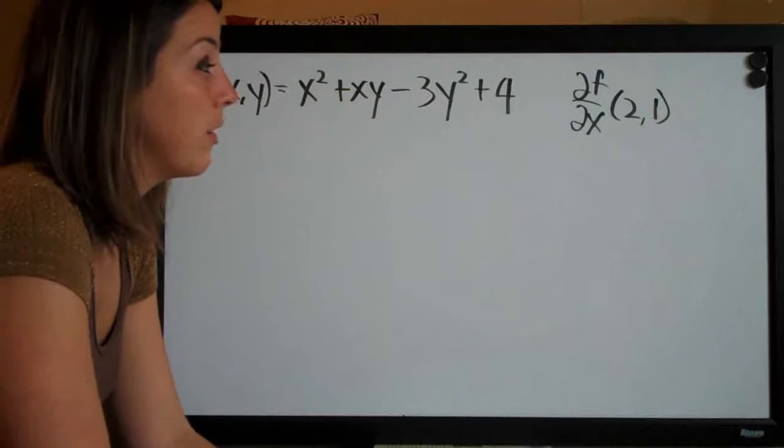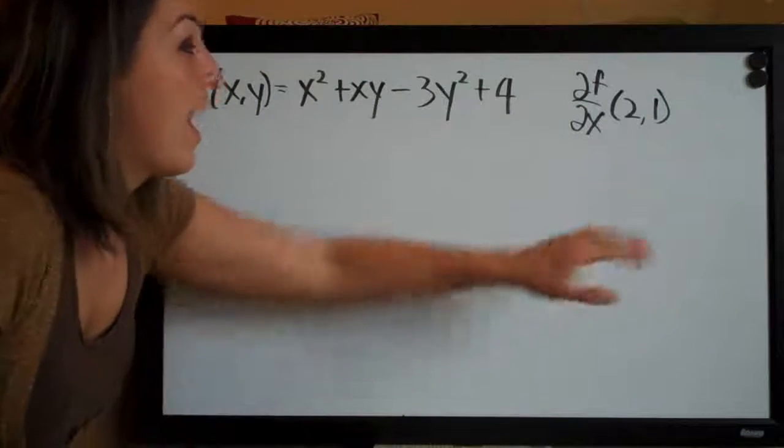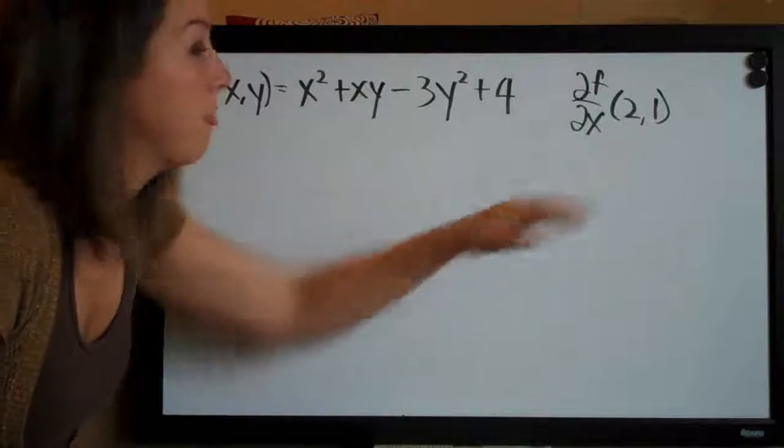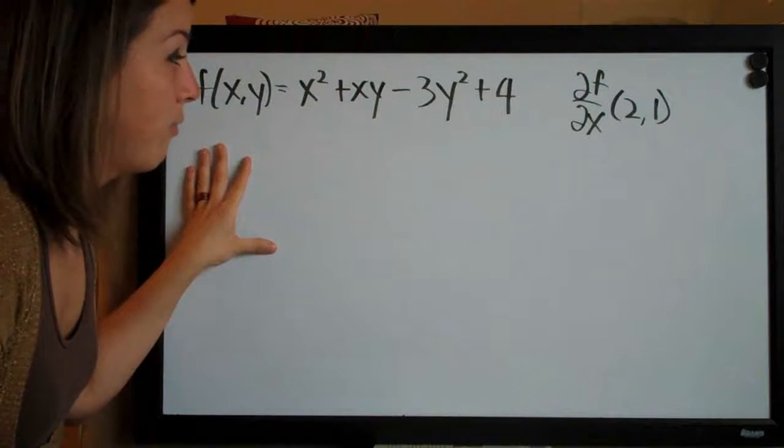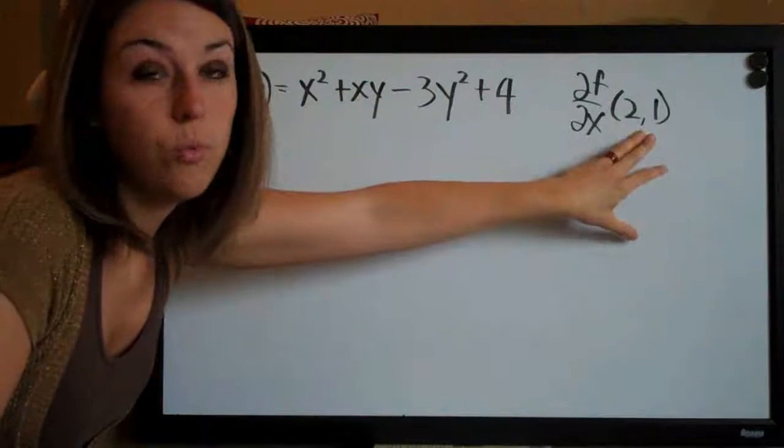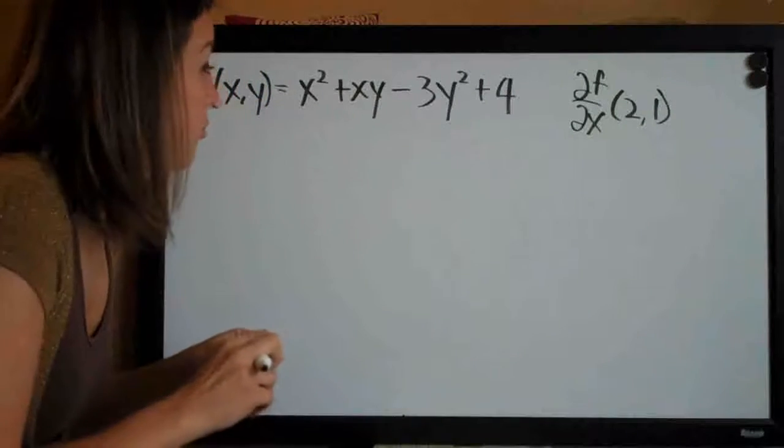And they've asked us to compute the partial derivative of f with respect to x at the point (2,1). So what we're going to be doing is computing the partial derivative of f with respect to x and then plugging in the point to our answer and finding the solution to this problem.